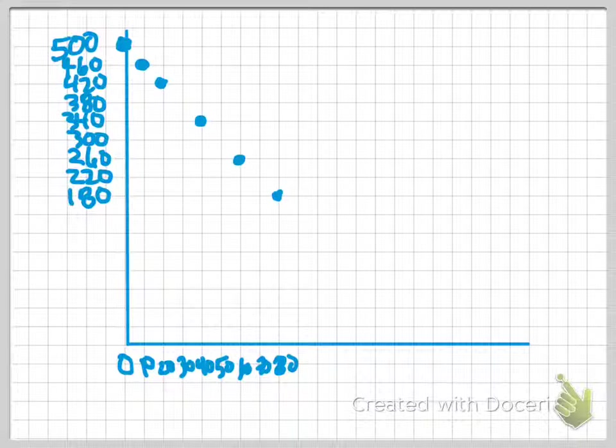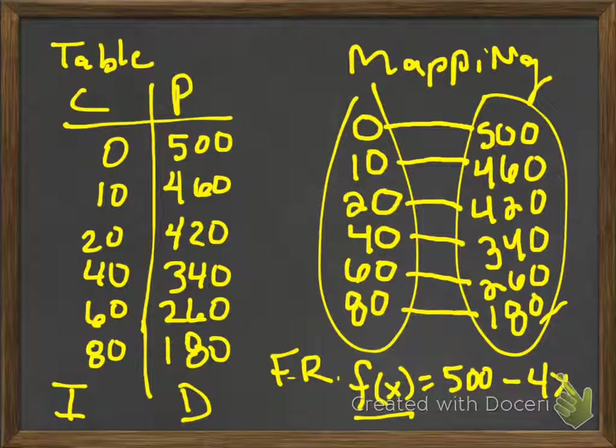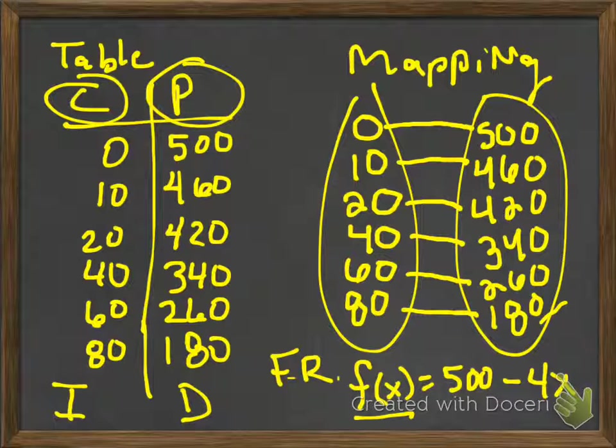Now, what's the independent and dependent variables again? Again, here's your independent. Here's your dependent. You're independent with the children. And you're dependent with the pieces left. Describe the relationship. As more children come to the door, less pieces are left. Or the pieces left is decreasing. The pieces left depends on the number of children that come to the door. All of those would be acceptable responses.